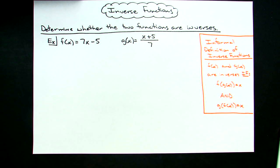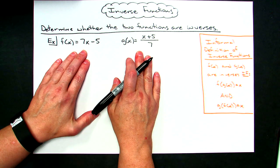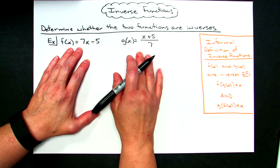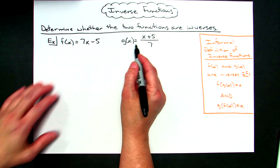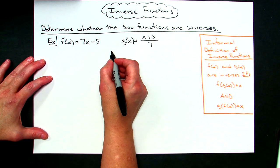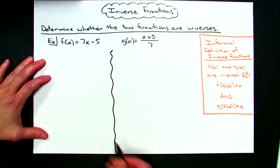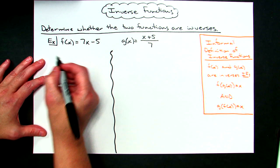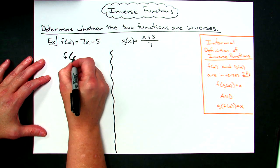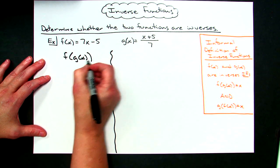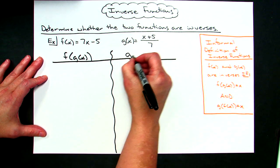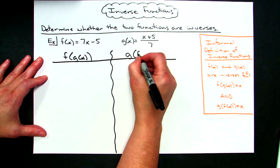So that's what I'm going to do. I've got two functions: f(x) equals 7x minus 5, and g(x) equals x plus 5, all over 7. I'm going to set this up into two columns on my paper — on the left-hand side I'll work out f of g of x, and on the right-hand side I'll work out g of f of x.